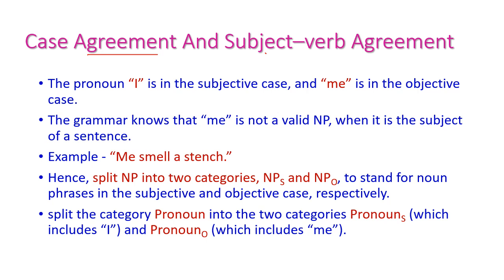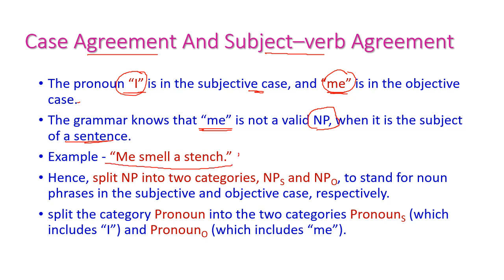Case agreement and subject-verb agreement. The pronoun 'I' is subjective case and 'me' is objective case — these two are different. The grammar knows that 'me' is not a valid noun phrase when it is the subject of the sentence. For example, 'me smells a snitch' is not an acceptable grammar sentence; instead 'I smells a snitch' is correct, while 'me smells a snitch' is wrong. Hence, we can split the noun phrase into two categories: subject noun phrase and object noun phrase. Likewise, the pronoun is divided into subject pronoun (I) and object pronoun (me).